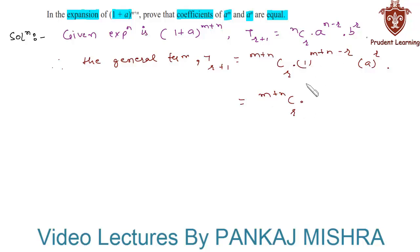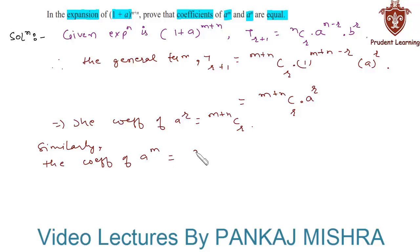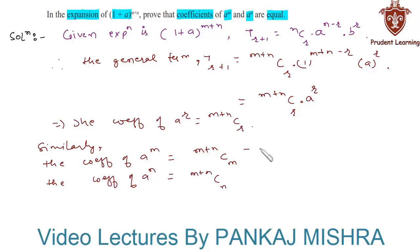Since 1 raised to anything is 1, this simplifies to (m+n)Cr · a^r. This implies that the coefficient of a^r is (m+n)Cr. Similarly, the coefficient of a^m is (m+n)Cm — substituting r = m — and the coefficient of a^n is (m+n)Cn. Let us call these expressions (1) and (2).